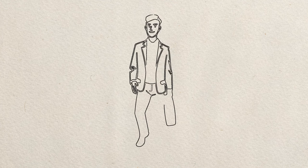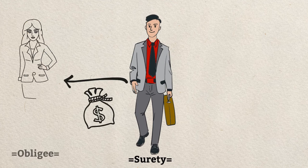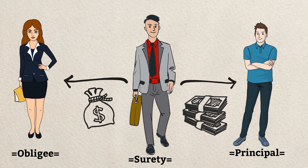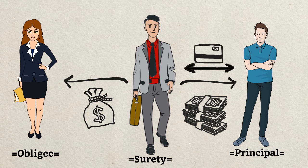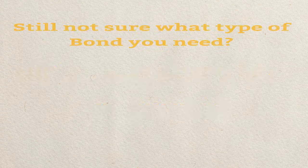Therefore, the surety sits in the middle, offering a guarantee of payment to one party and collecting the payment if a claim is made from the other party. When the principal purchases a surety bond, they are buying a line of credit. The surety is simply saying they're good for it.